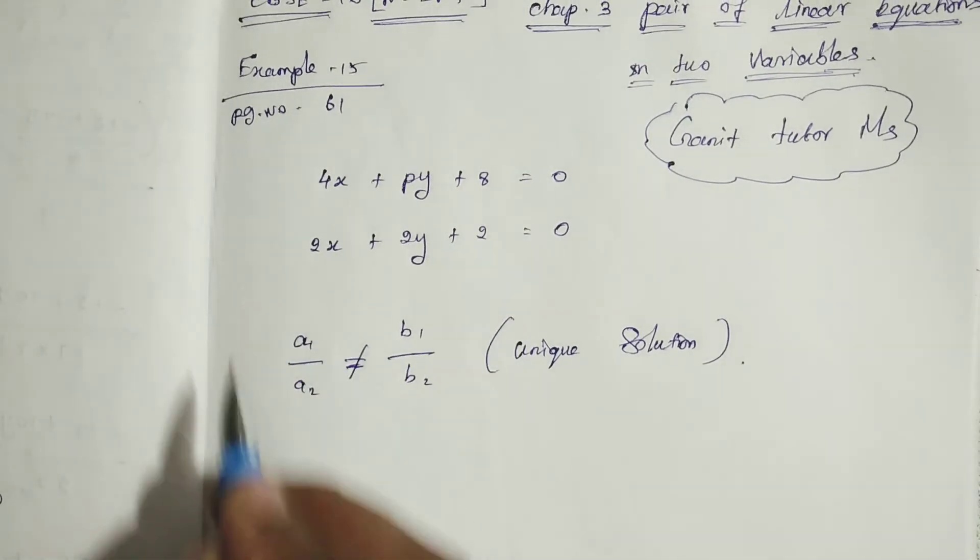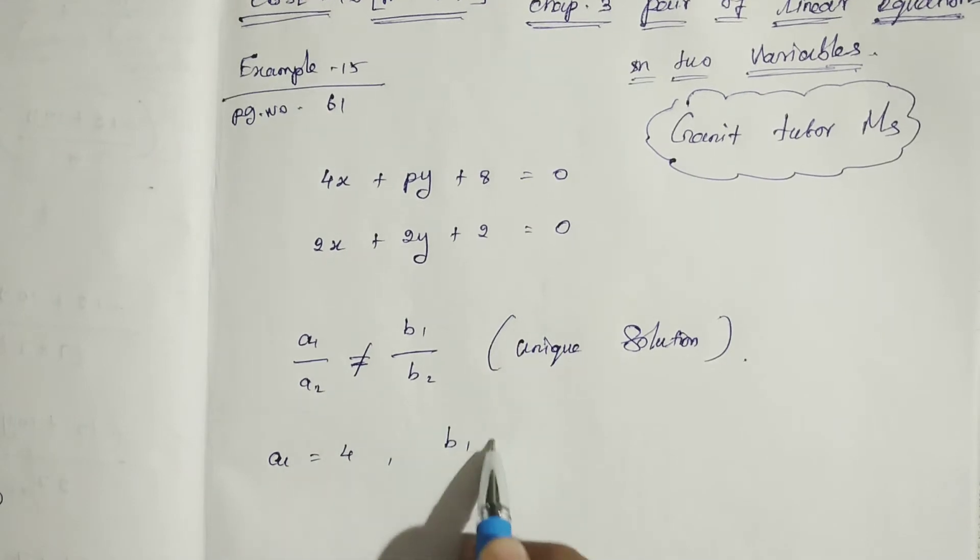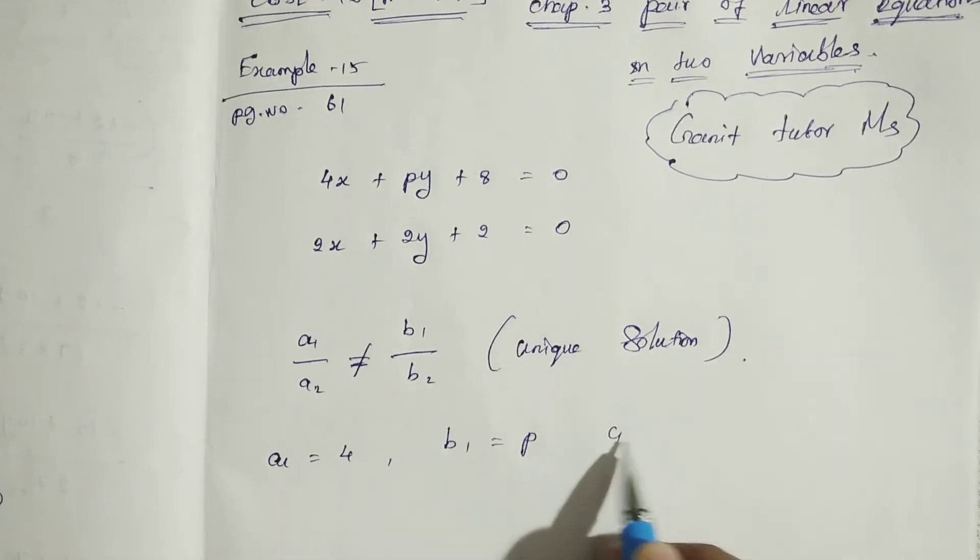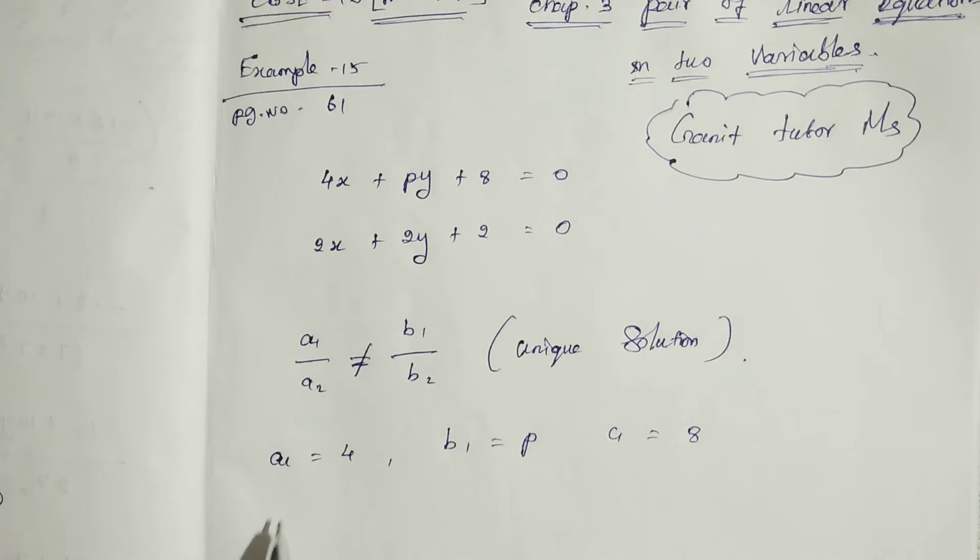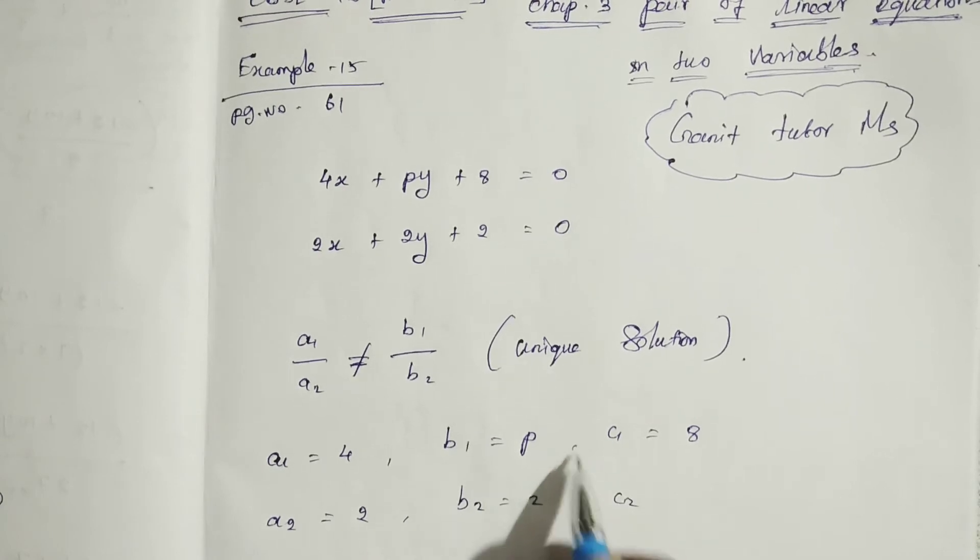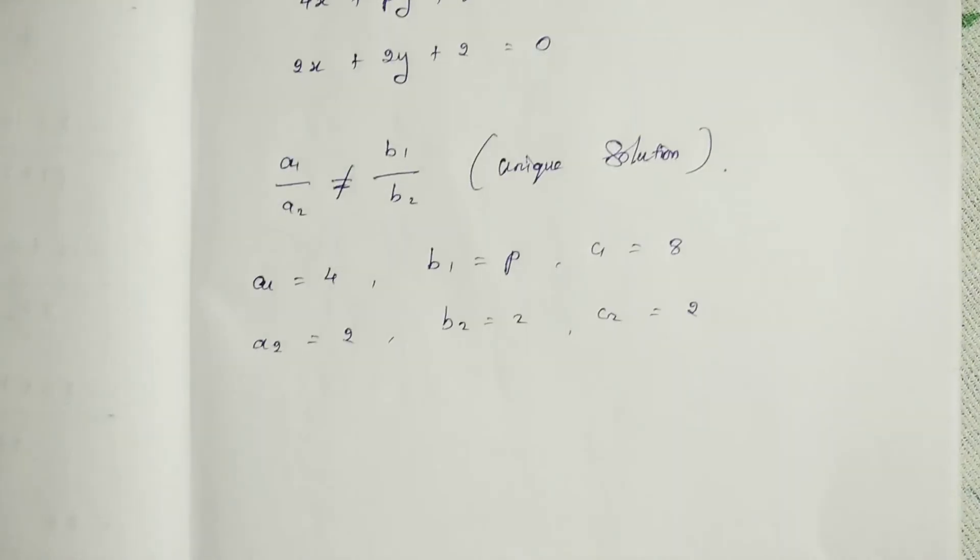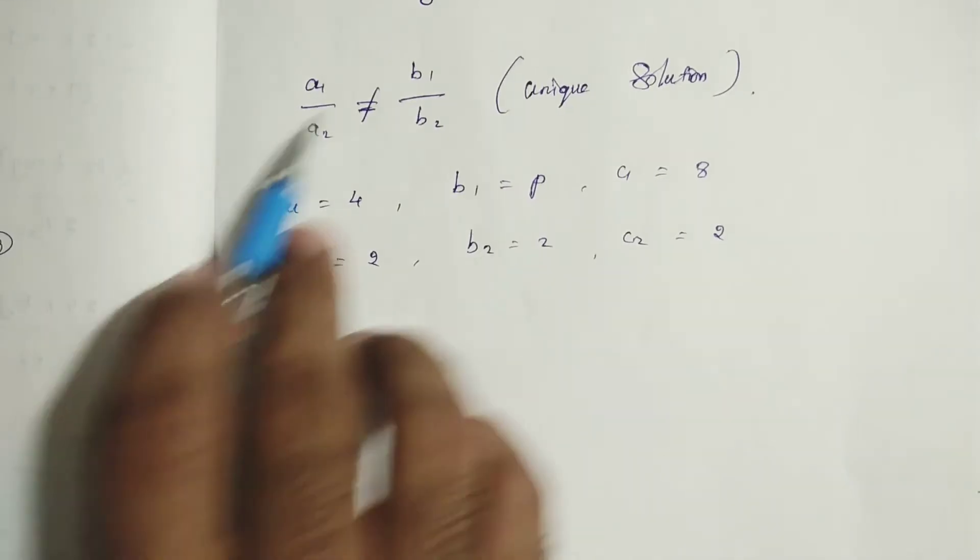Now we can find out, we can write the value from this equation. A1 is equal to 4, B1 value p, C1 value 8. Next here, A2 value 2, B2 value 2, C2 value 2. Clear? Now we can substitute the value in this form.